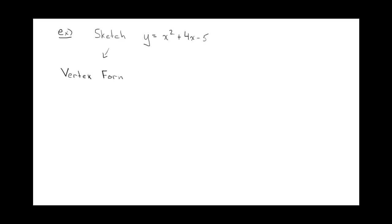So you would have to change this to vertex form. I'll just quickly go over this. So you have to complete the square. So you take half of 4 and square it. It's plus 4, minus 4.